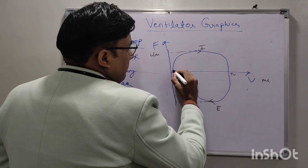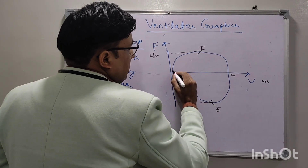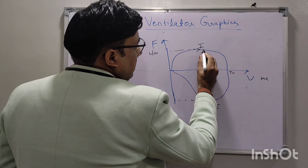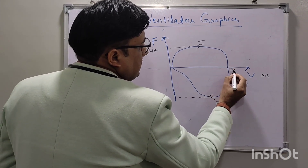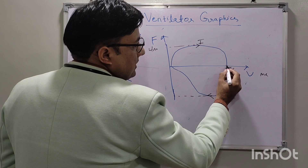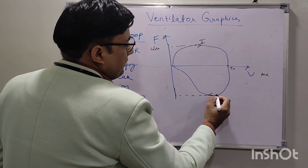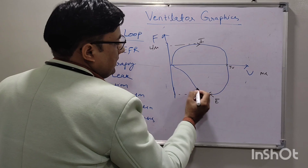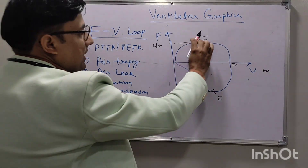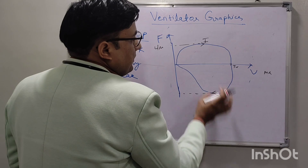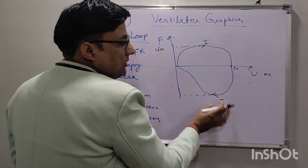With increasing flow there is increasing volume, and after reaching tidal volume, expiration starts. After expiration, flow is negative and volume is decreasing, returning to baseline. So above the baseline is inspiration and below the baseline is expiration.